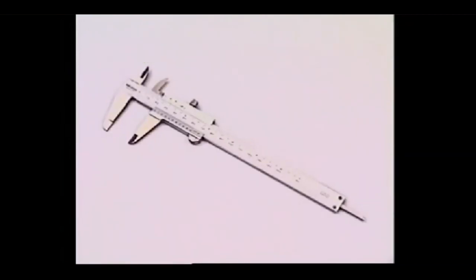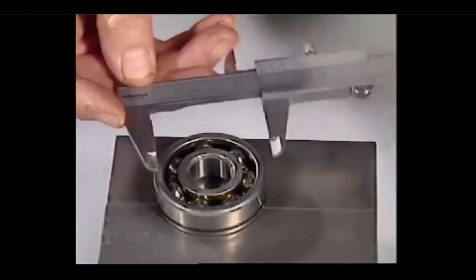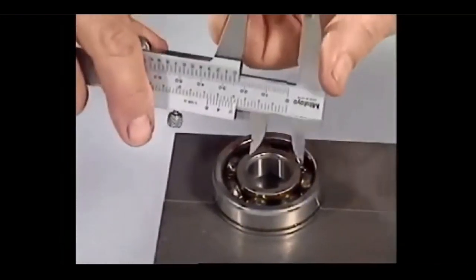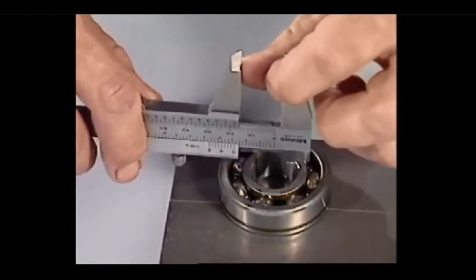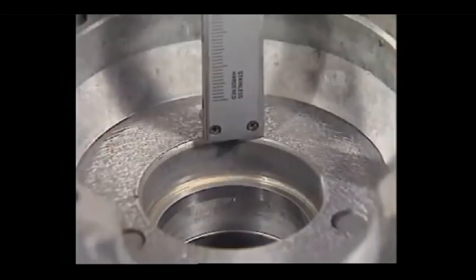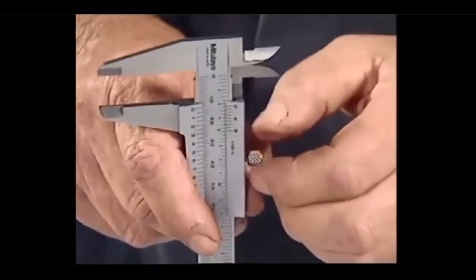If a distance needs to be measured with a high degree of accuracy, vernier calipers can be used. The sliding jaw grips the surfaces being measured on the outside, or for an internal measurement with these jaws on the inside. Depth can also be measured with the end of the caliper slide.